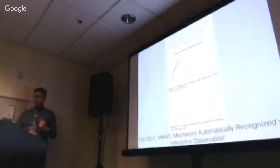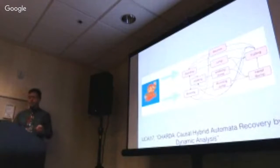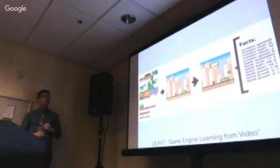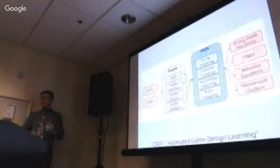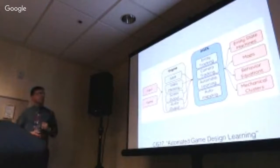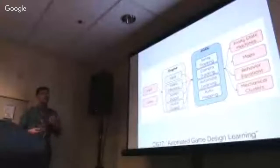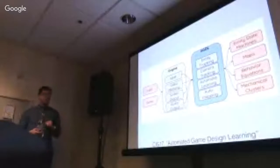At IJCAI last year, we presented work on recovering hybrid automata models from observations of game characters using segmented regression. Matthew had a paper on learning transition rules for game worlds by observation of video. It's a very lively area right now. We have a summary paper at Computational Intelligence in Games on this umbrella project and all the different fields it intersects with — a good starting point if you're looking for communities to publish with or read their proceedings.